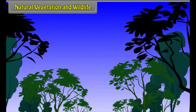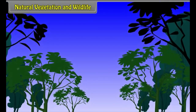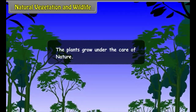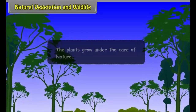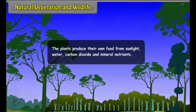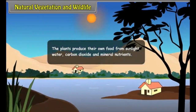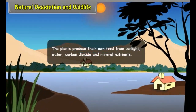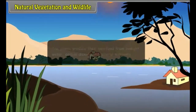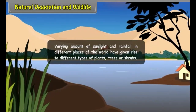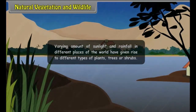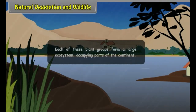Natural Vegetation and Wildlife: The plants grow under the care of nature. The plants produce their own food from sunlight, water, carbon dioxide and mineral nutrients. Varying amounts of sunlight and rainfall in different places of the world have given rise to different types of plants, trees or shrubs. Each of these plant groups forms a large ecosystem occupying parts of the continent.